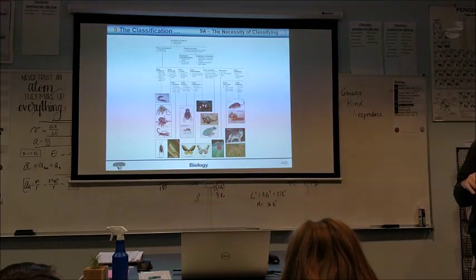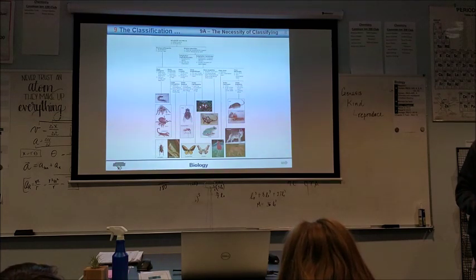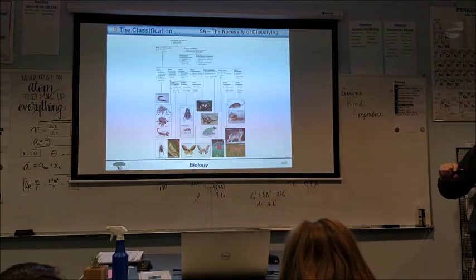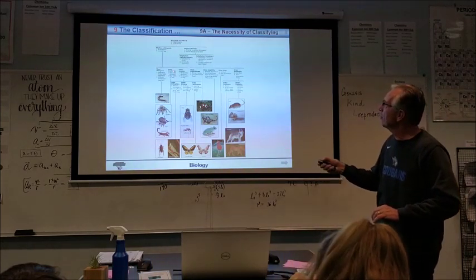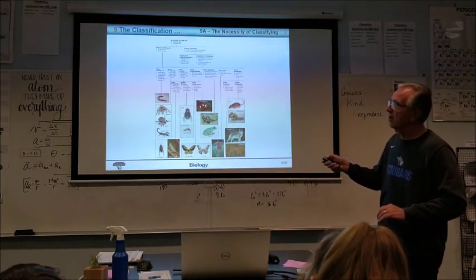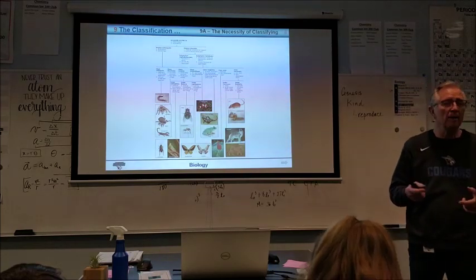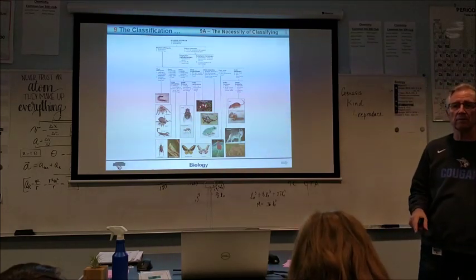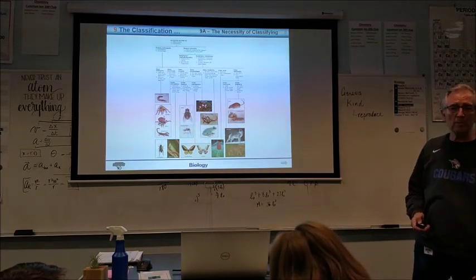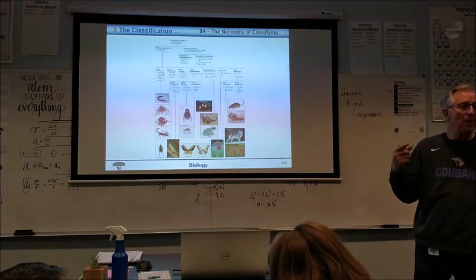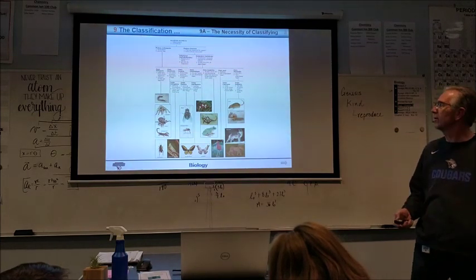So, do you see how as you go down, they become more and more specific. But, everything on the bottom, like all of these down here, still have all the properties, or the characteristics of this one up and down. They have their skeleton on the outside, and they have jointed legs. There's probably some other characteristics, too, but that was the main one. So, do you kind of see the pattern that Carolus Linnaeus came up with?